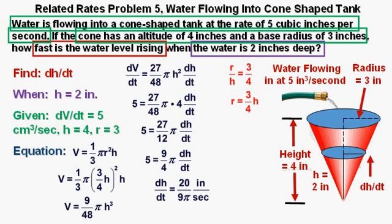So we have dh/dt = 20/(9π) inches per second, or the rate the water level is rising in inches per second when the water level is 2 inches above the bottom of the cone-shaped tank, which we box in as our correct answer.